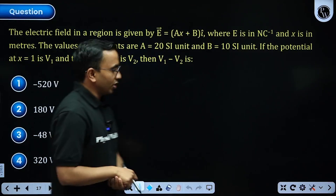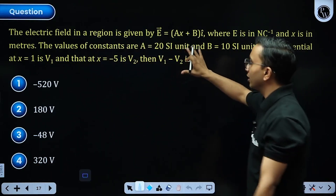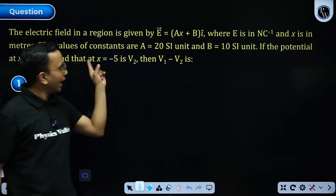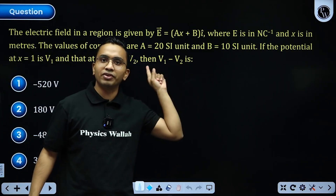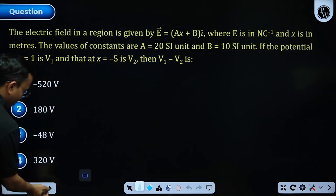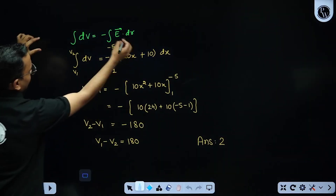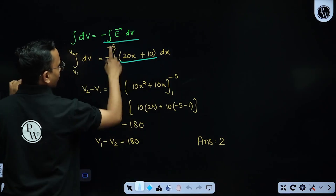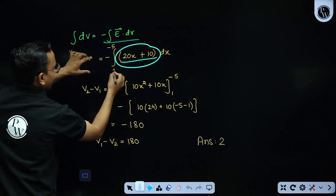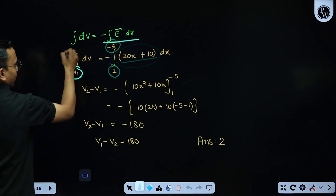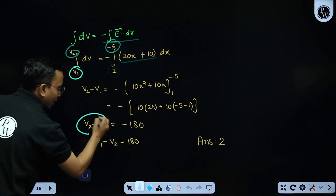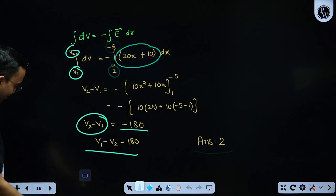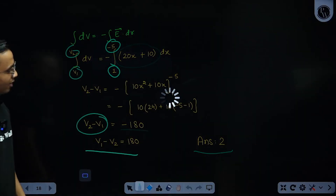Next question: an electric field expression is given. At x = 1 the potential is V1, and at x = −5 the potential is V2. We know dV = −∫E·dr. Substituting the expression for E and integrating with limits from 1 to −5 gives V2 − V1 = −180, so V1 − V2 = 180. The answer is option 2.